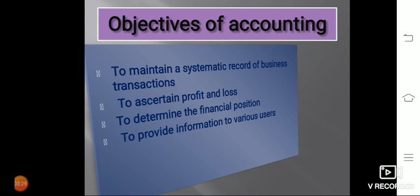Next is to ascertain profit and loss. The second main objective of Accounting is to ascertain the net profit earned or loss suffered on account of business transactions during a particular period.